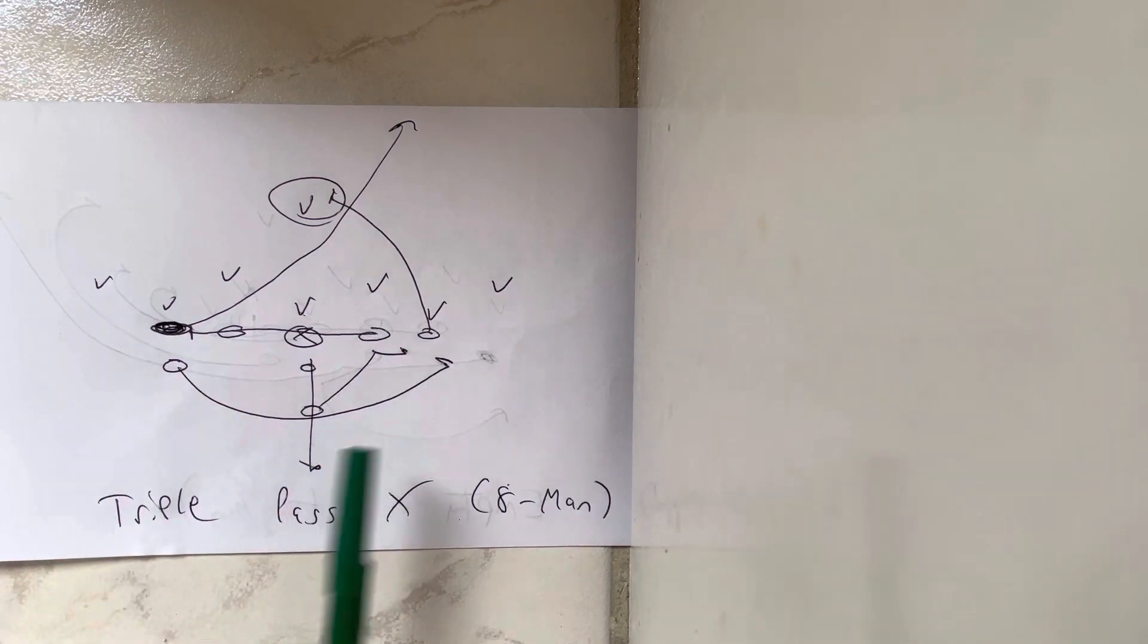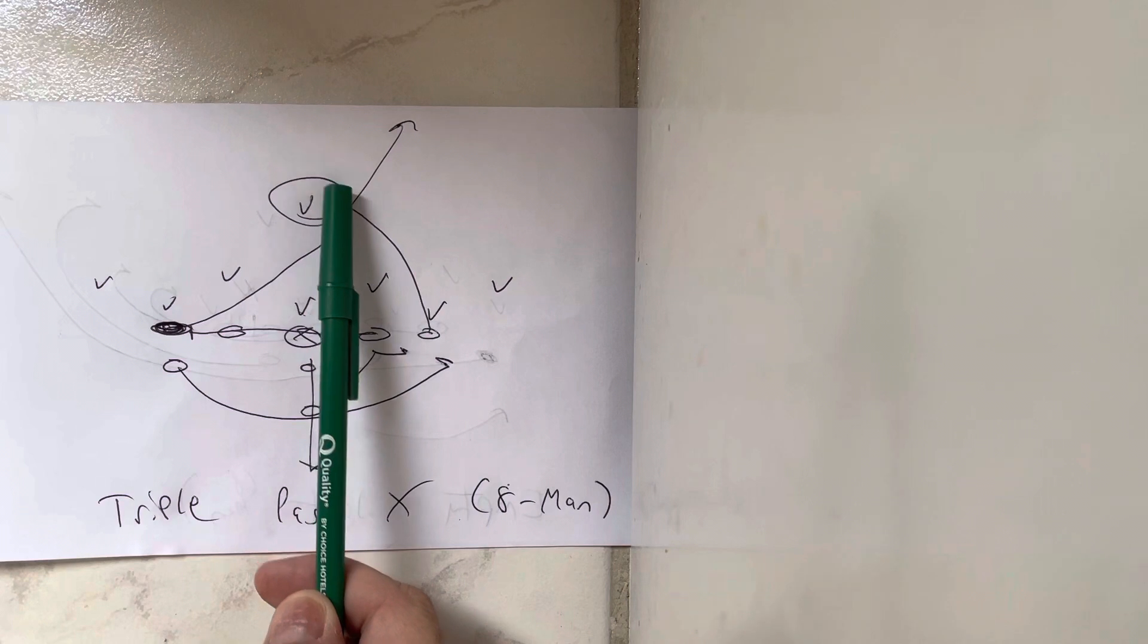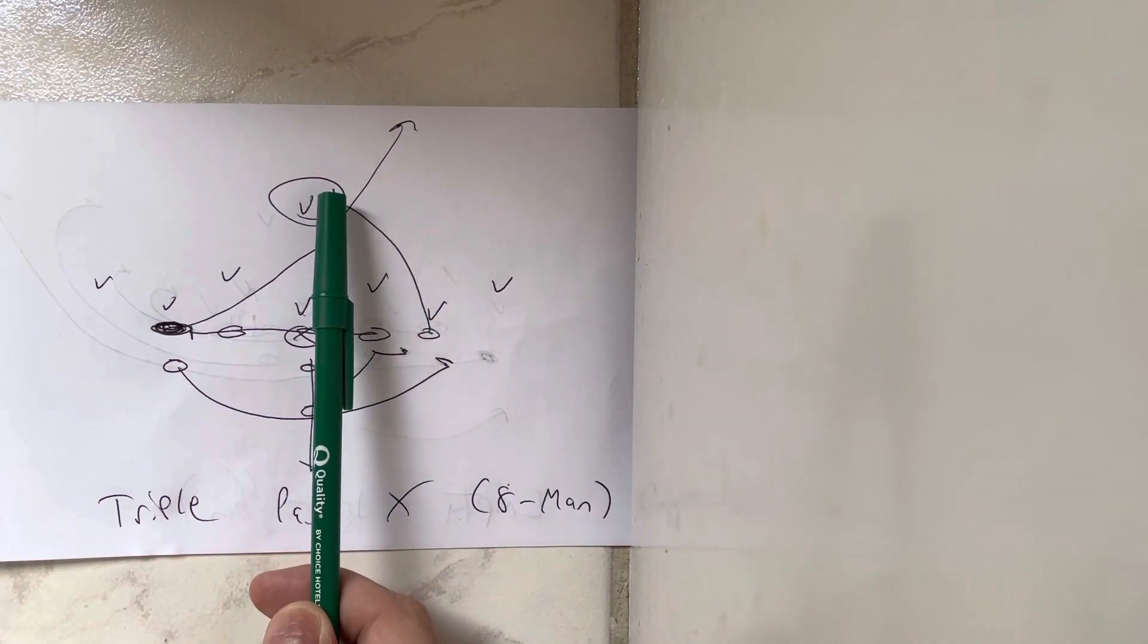So what you do is you've got your two ends here. If you call triple pass X to the right, the right end is going to inside release. If you had a four-eye, you'd have to outside release it. And he's going to run to get two yards in front of the upfield shoulder of the safety.